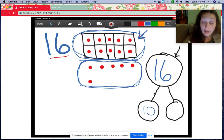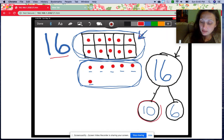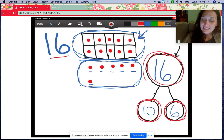How many counters are in the second part here? If you're not sure, you can go back and count. Let's do that together. One, two, three, four, five, six. Six counters in my second part. Okay, remember, boys and girls, we have part, part, whole. Ten and six make 16.